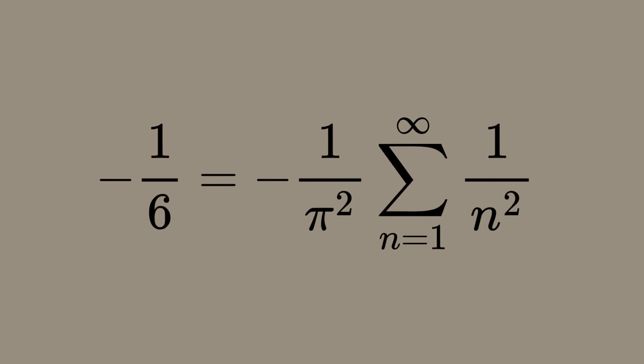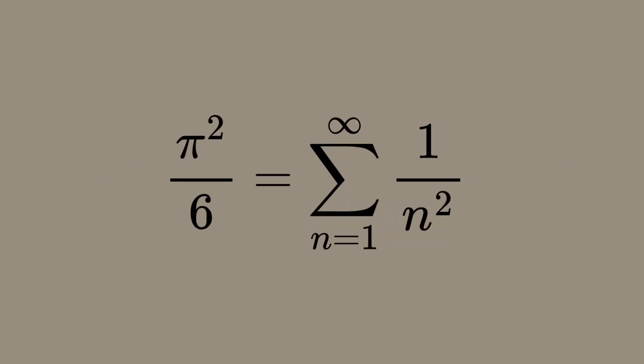This groundbreaking result meant that the sum of the reciprocals of the squares of all natural numbers is exactly π² over 6.